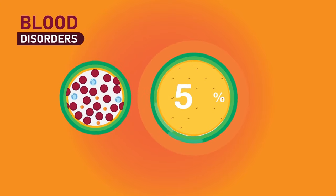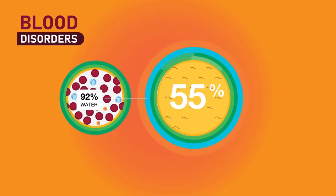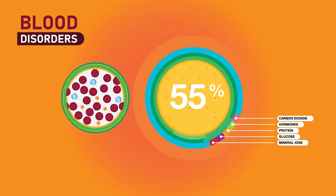Plasma, which constitutes 55% of blood fluid, is mostly water, 92% by volume, and contains dissolved proteins, glucose, mineral ions, hormones, and carbon dioxide.